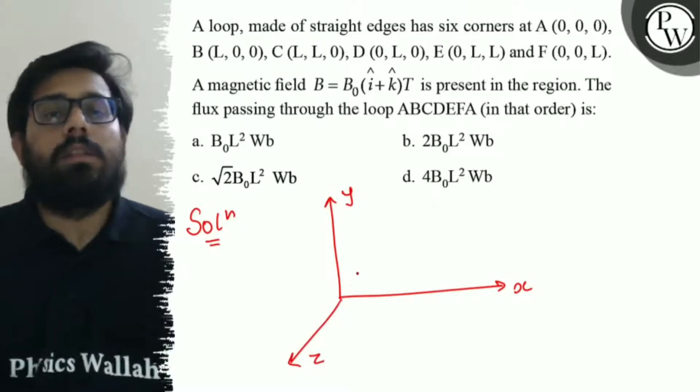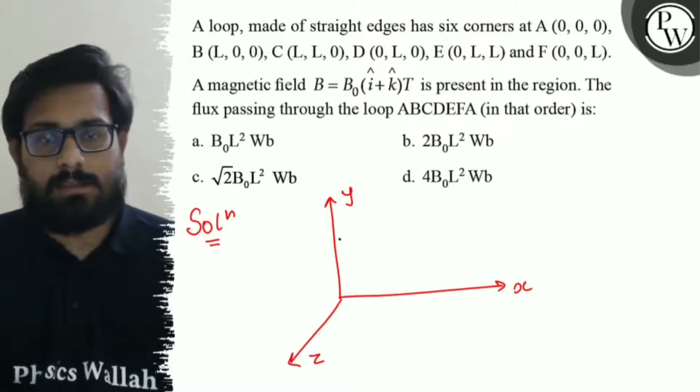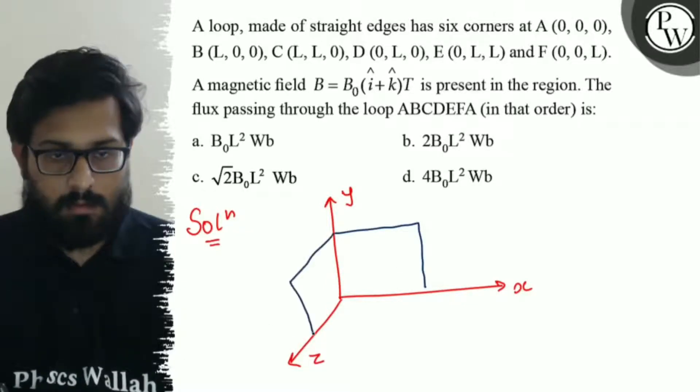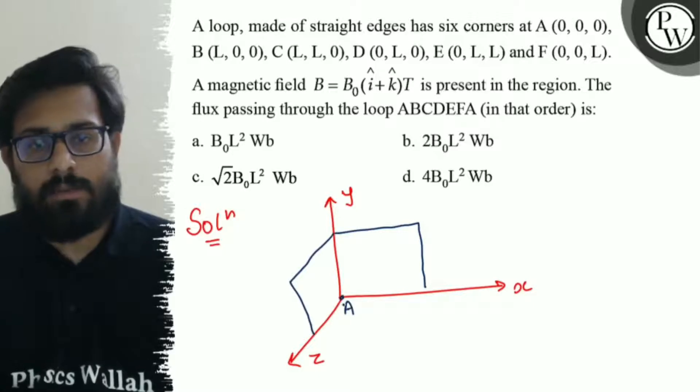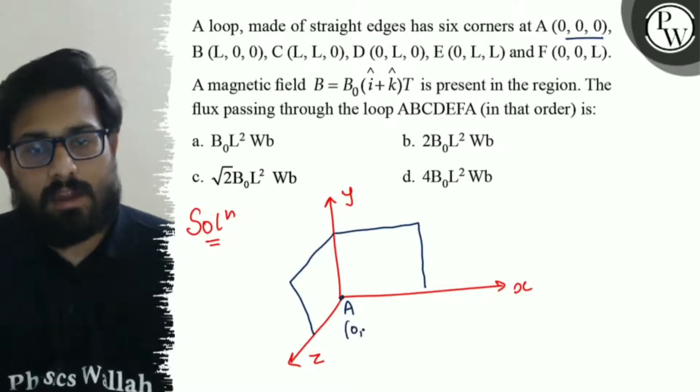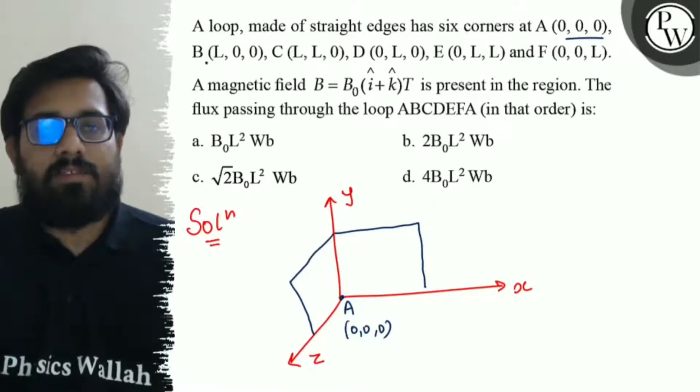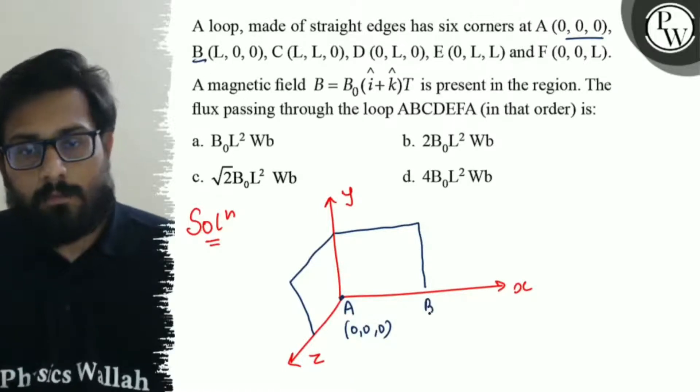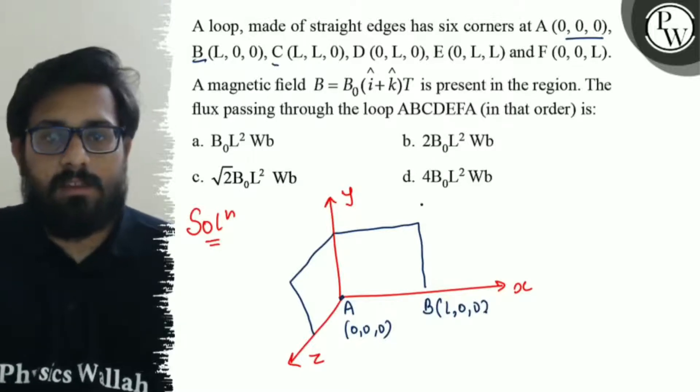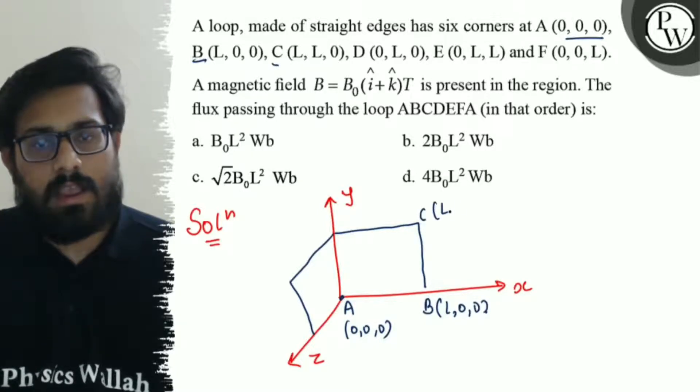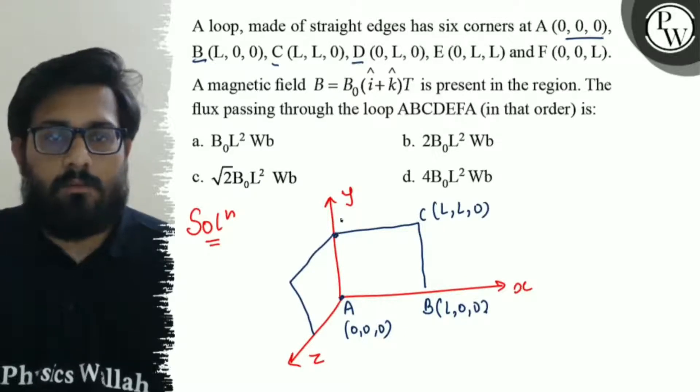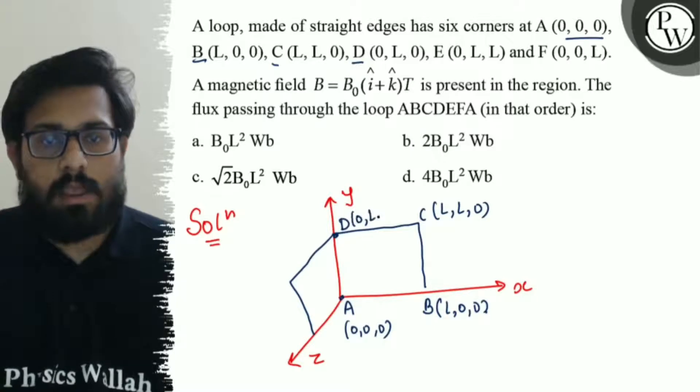Now, the loop is something like this. We have a loop like this. We have A at this point, which is at 0, 0, 0 origin. So, we have the value of A at this place. Then we have the value of B as here, which is L, 0, 0. Then we have the value of C, which is at L, L, 0. The value of D as 0, L, 0, which is at the y-axis, 0 L, 0.